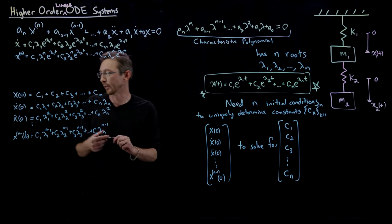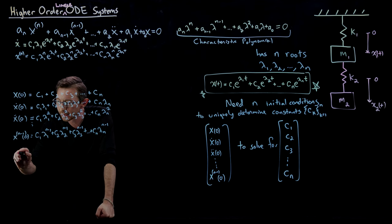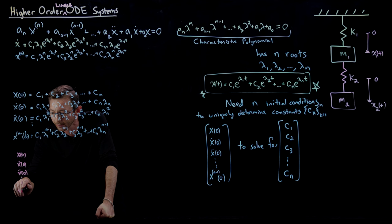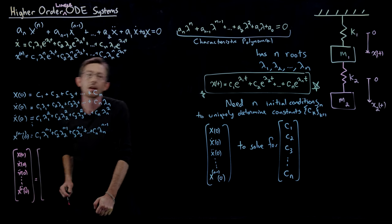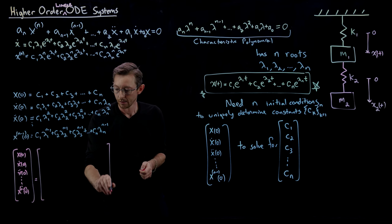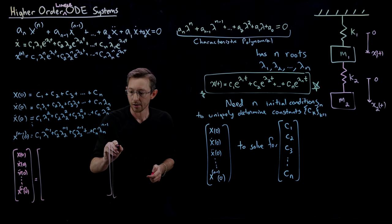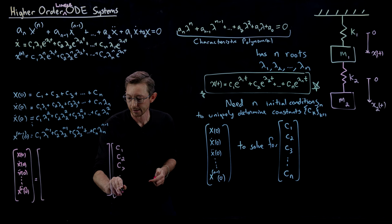Now here's where it gets interesting. I can write this as a matrix system of equations. I have a vector [x(0), x-dot(0), x double-dot(0), ..., x^(n−1)(0)] on the left, and this is going to be a matrix times my coefficient vector [c₁, c₂, c₃, ..., cₙ].